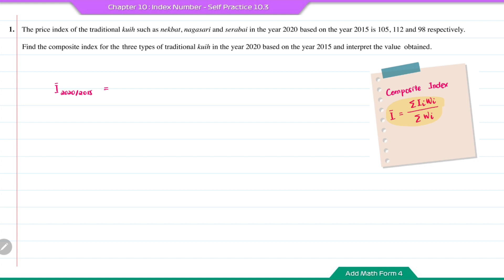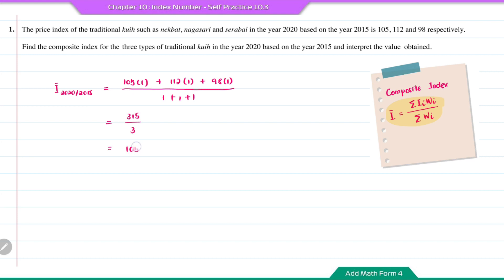To find the composite index, we take the price index of each traditional kueh and multiply it with the weightage, then divide by the total weightage. So it's going to be (105×1 + 112×1 + 98×1) divided by (1+1+1), giving us 315 divided by 3. The answer will be 105.